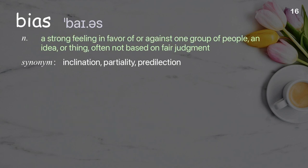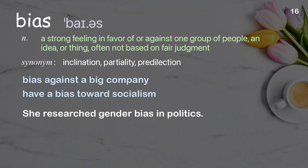Bias: a strong feeling in favor of or against one group of people, an idea, or thing, often not based on fair judgment. Examples: bias against a big company, have a bias towards socialism. She researched gender bias in politics.